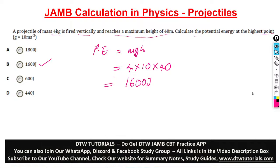Don't forget to get the JAM CBT app — it costs 2,000 and will really help you. All links are in the video description box. If you need summary notes or study guides, check the website. You can also join the WhatsApp study group or the Facebook group. Take care and see you in the next video.